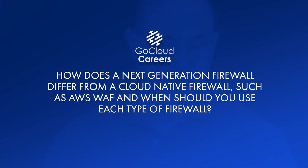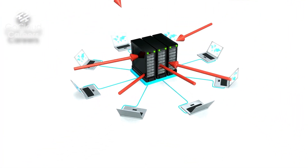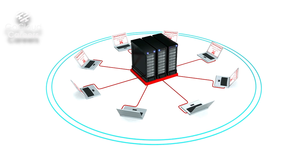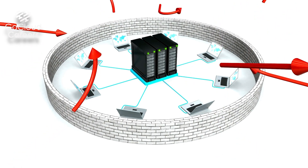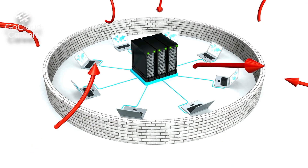Another question I like to ask potential Cloud Architects is: how does a next generation firewall differ from a cloud-native firewall, such as an AWS WAF, which is made by the cloud provider, and when should you use each type of firewall? I'm looking for the cloud architect to know that a cloud provider's firewall like AWS WAF is a good firewall in general — it blocks unwanted traffic from coming in and allows outbound traffic to go out and then return.